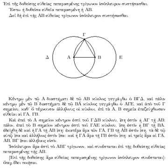Thomas Bradwardine proposed that speed V increases in arithmetic proportion as the ratio of force F to resistance increases in geometric proportion. Bradwardine expressed this by a series of specific examples, but although the logarithm had not yet been conceived, we can express his conclusion anachronistically by writing V equals log. Bradwardine's analysis is an example of transferring a mathematical technique used by Al-Kindi and Arnaldus de Villa Nova to quantify the nature of compound medicines to a different physical problem.